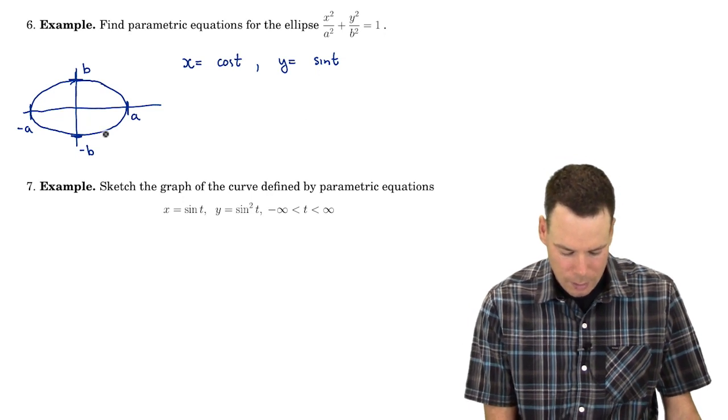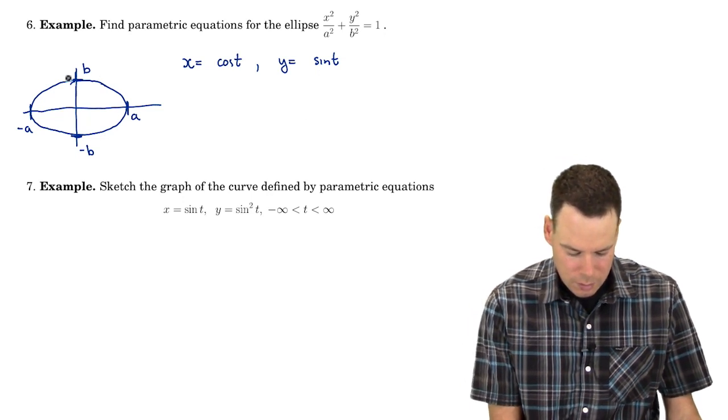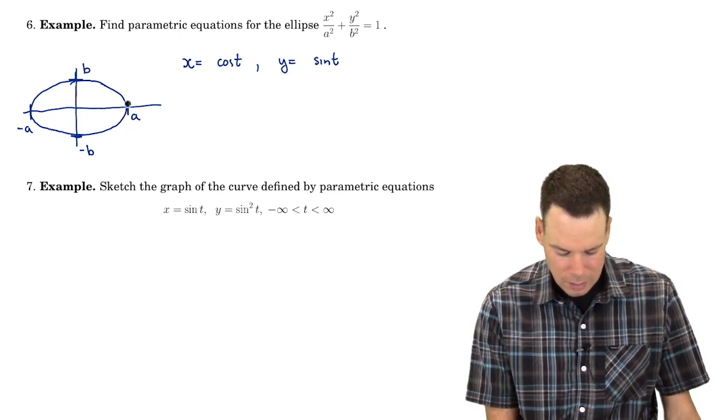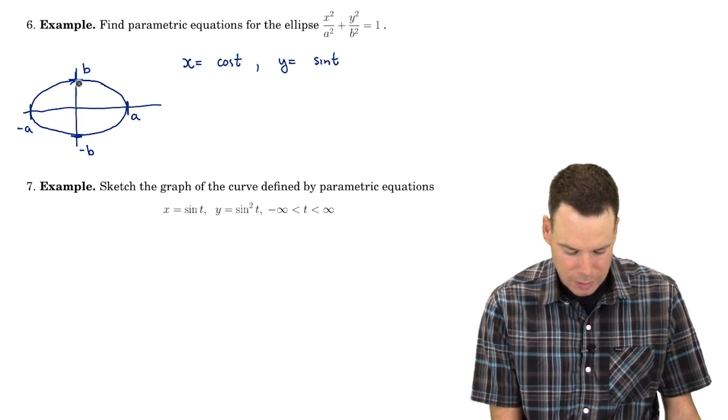But I can look at this and say, I want the x values to go from negative a to a but I only want the y values to go from negative b to b.